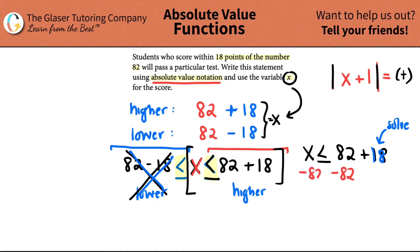Get rid of that, so this would be x minus 82 is less than or equal to 18. And now I'm ready to just put in my absolute value. And there you go, that is my answer in absolute value notation.